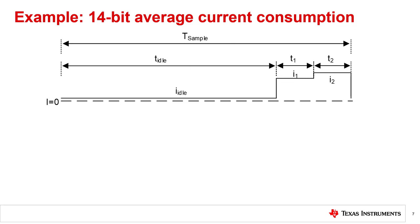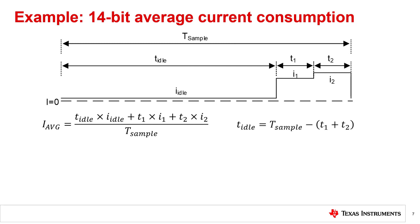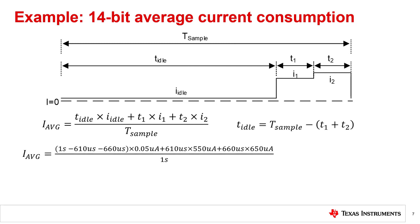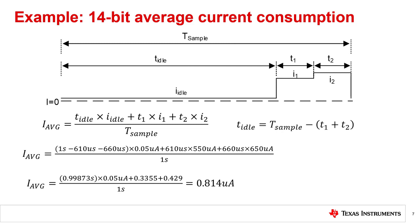Since we've now seen actual current captures from an HTC2 sensor, let's do a quick example of calculating average current consumption using the method we discussed before. In this case, we want to configure the HTC2 for a single high-resolution 14-bit measurement every second. We can take our equation from before, and our substitution for T-idle, and plug in all the values known from configuration and from the HTC2 datasheet. If we calculate and combine, we will find that the average current, using these typical datasheet values, is around 0.814 microamps, or 814 nanoamps. This is extremely low power, corresponding to potentially more than 5,000 days from a 100 milliamp hour battery.